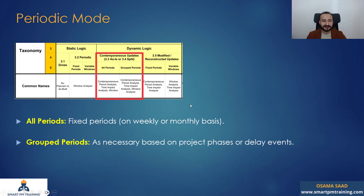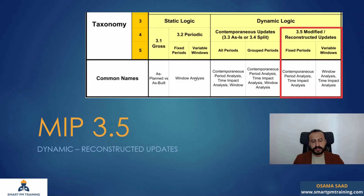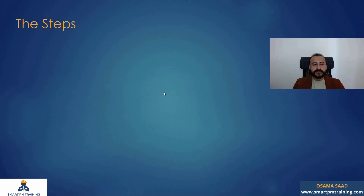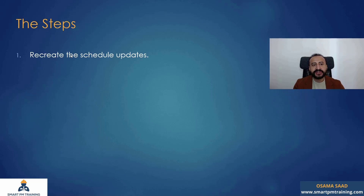And this is it for the MIP 3.4 dynamic split. The MIP 3.5 is very similar to the 3.3 and 3.4 — in the MIP 3.5 it's reconstructed updates. You use this method if you want to reconstruct schedule updates for any reason before you implement the analysis method. The first step is to recreate the schedule updates, then implement the analysis according to MIP 3.3 or 3.4.